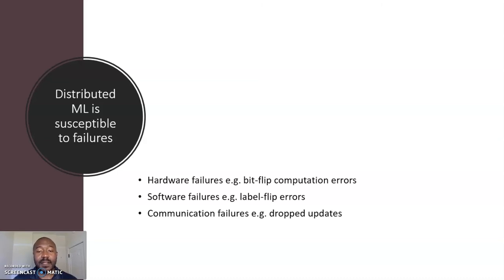Nevertheless, distributed machine learning is susceptible to failures, some of which are unique to the distributed setting. Common issues include hardware failures, bitflip computation errors as an example, software failures such as incorrect label coding, and communication failures such as dropped updates.